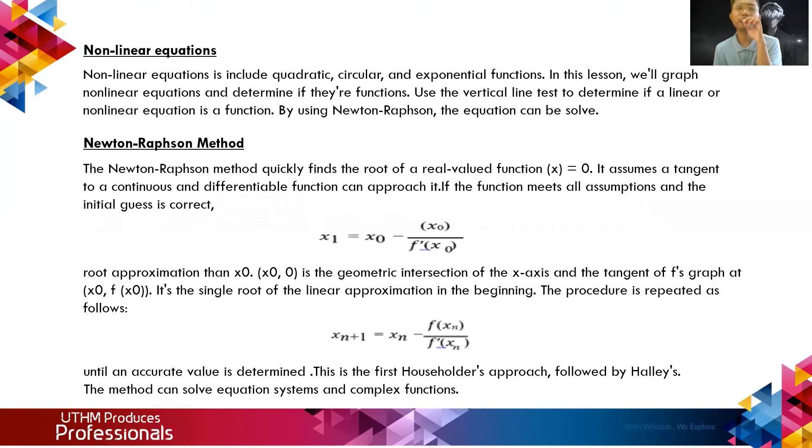Using the Newton-Raphson method, the equation can be solved. The Newton-Raphson method quickly finds the root of a real-valued function where f(x) equals zero. It assumes a tangent to a continuous and differentiable function. Using the formula, the approximation x₁ = x₀ - f(x₀)/f'(x₀), where x₀ is the geometric intersection of the x-axis and the tangent of f at x₀. This is the single root of the linear approximation. The process is repeated using this formula until an accurate value is determined.